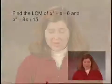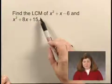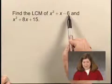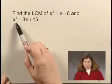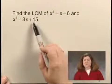In this problem, we'll find the LCM, or least common multiple, of two expressions. We'll be finding the least common multiple of x squared plus x minus 6 and x squared plus 8x plus 15.